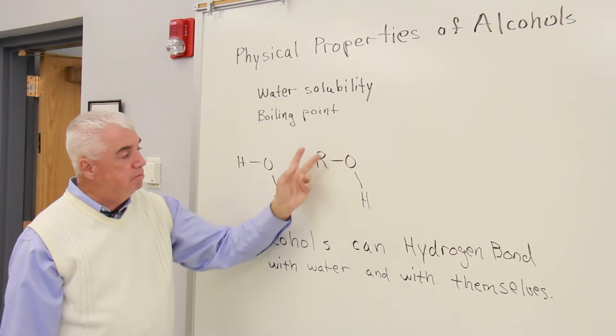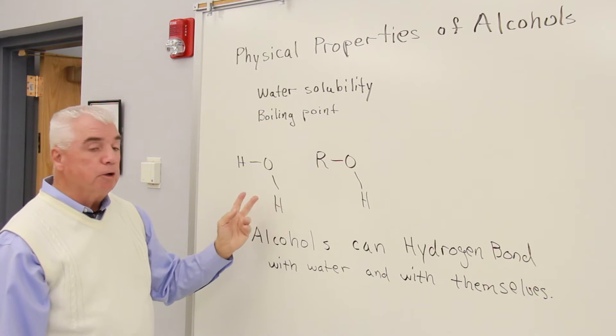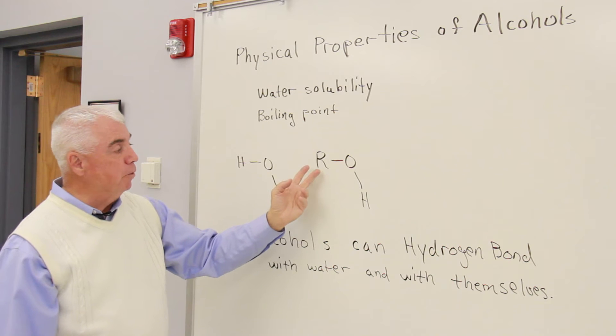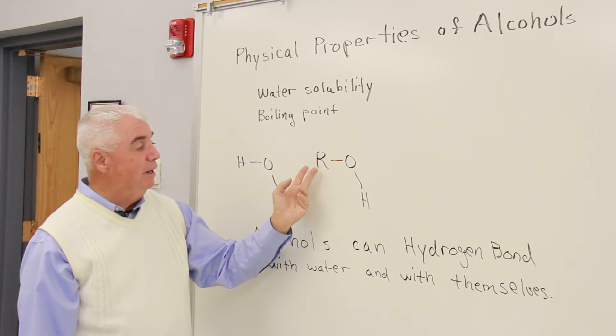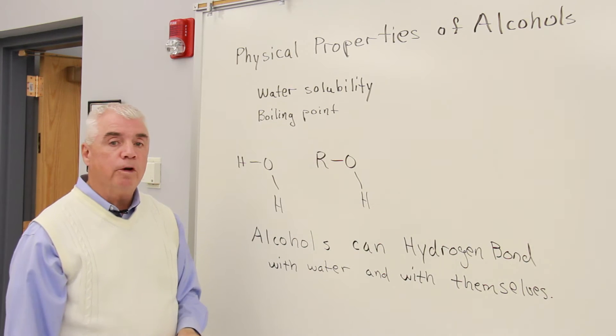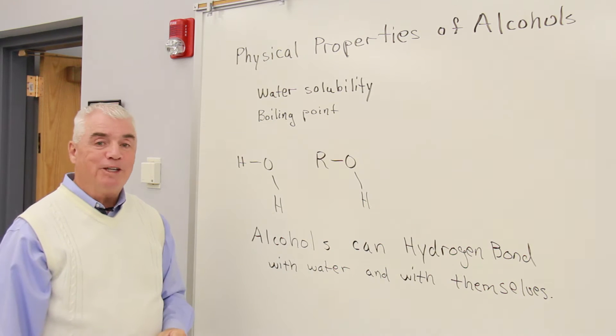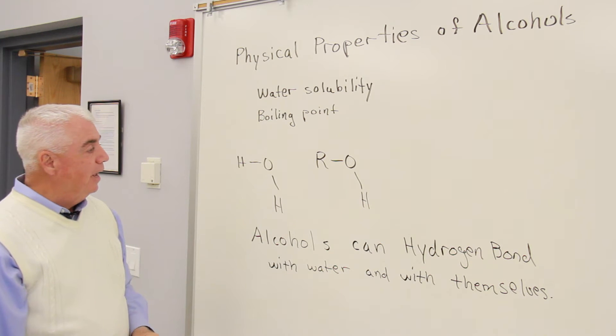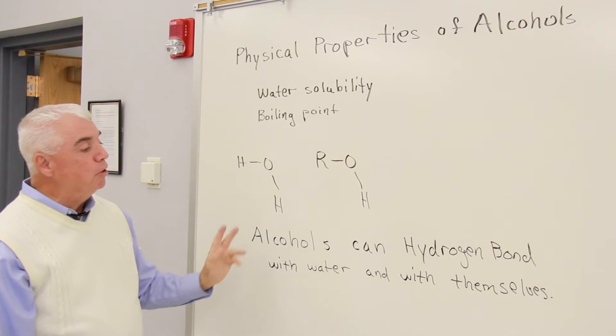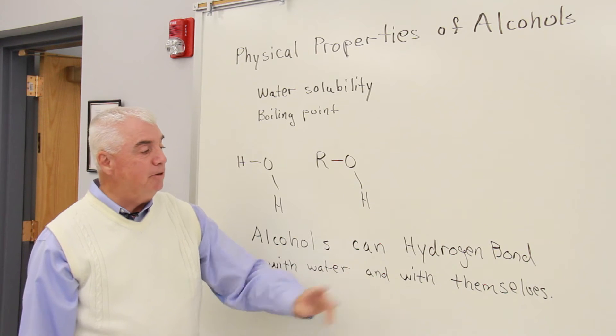Here's the symbol for an alcohol, and notice that it's similar to the structure of water over here. One of the H's of water has been replaced by this R group, which could be a methyl or an ethyl or anything organic, a long chain of five, a ring, whatever, with that OH functional group. And because of the similarities with water, alcohols can hydrogen bond with water and with themselves.